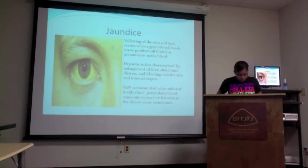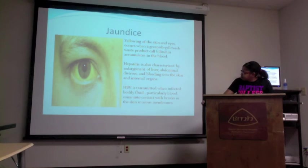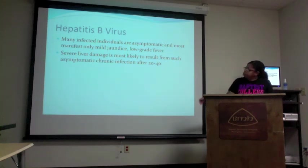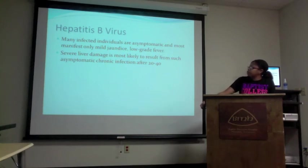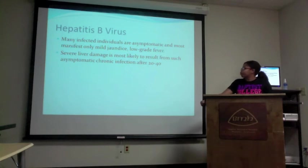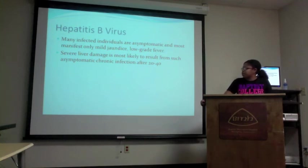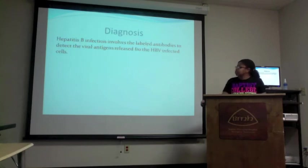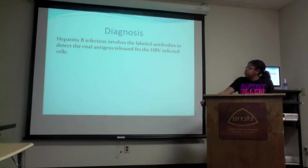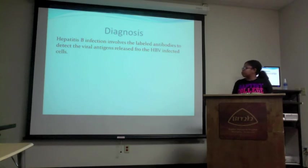HBV is transmitted when infected body fluids, particularly blood, come in contact with a break in skin or mucous membrane. Many infected individuals are asymptomatic, and most manifest only malaise and low-grade fevers. Severe liver damage is most likely to result from such asymptomatic chronic infections after 20 to 40 years. Hepatitis B diagnosis involves laboratory antibodies to detect the virus antigens released from HBV-infected cells.